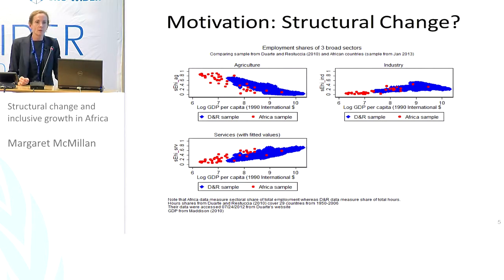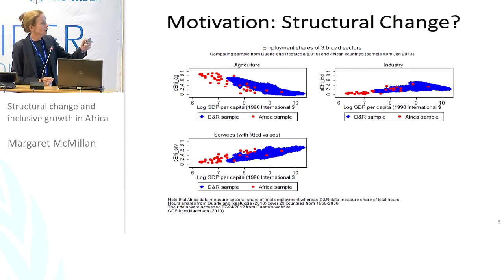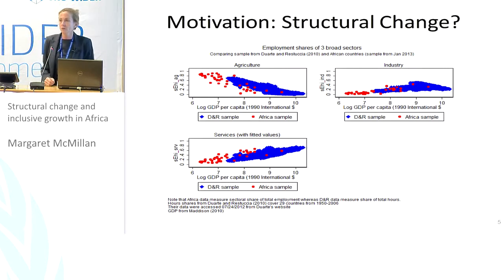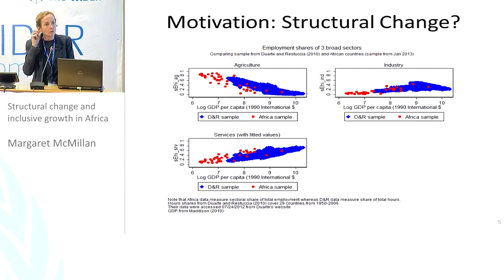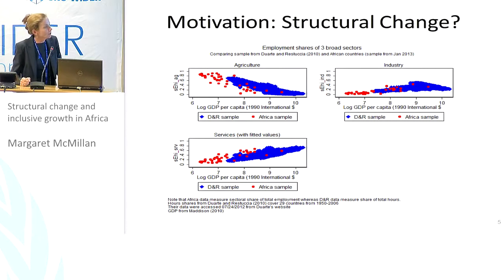Alternatively, there's the possibility that Africa's growth has actually been based on structural change. I have up here three different panels: Agriculture, Industry, and Services. The original graphs are from a paper published in the QJE by Margarita Duarte and Diego Restuccia in 2010, which looks at causes, consequences, and implications of structural change in a cross-section of countries. However, their dataset includes no African countries. The innovation here is that we superimpose our data from Africa on those graphs.